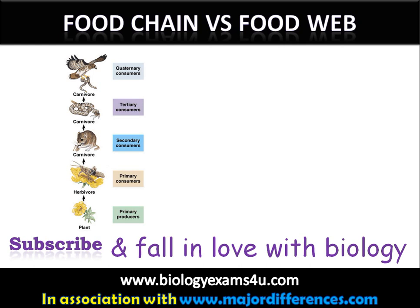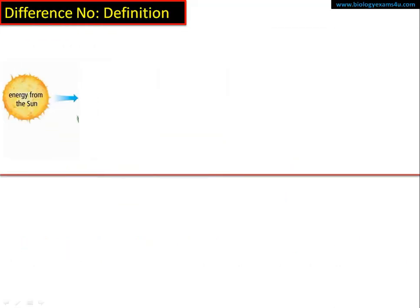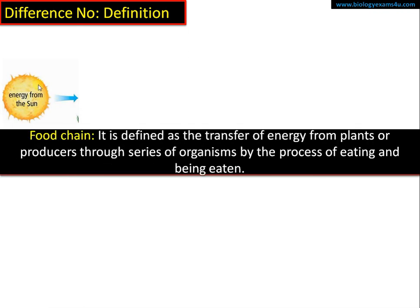Hi friends, once again back to biologyexams4u.com. Today the topic of our discussion is the difference between food chain and food web — two key terms in ecology. Starting with the definition, let's take an image to understand the concept.